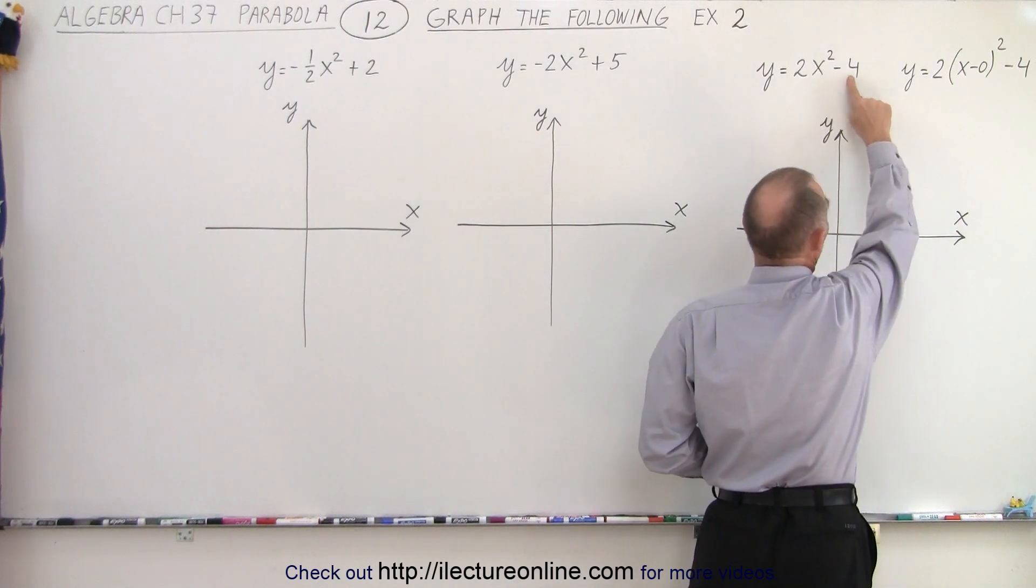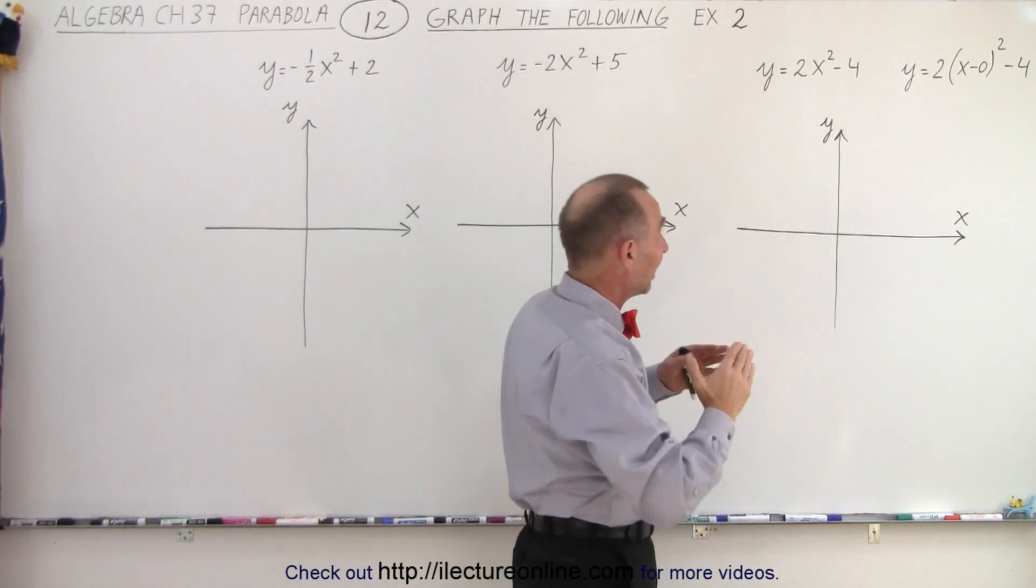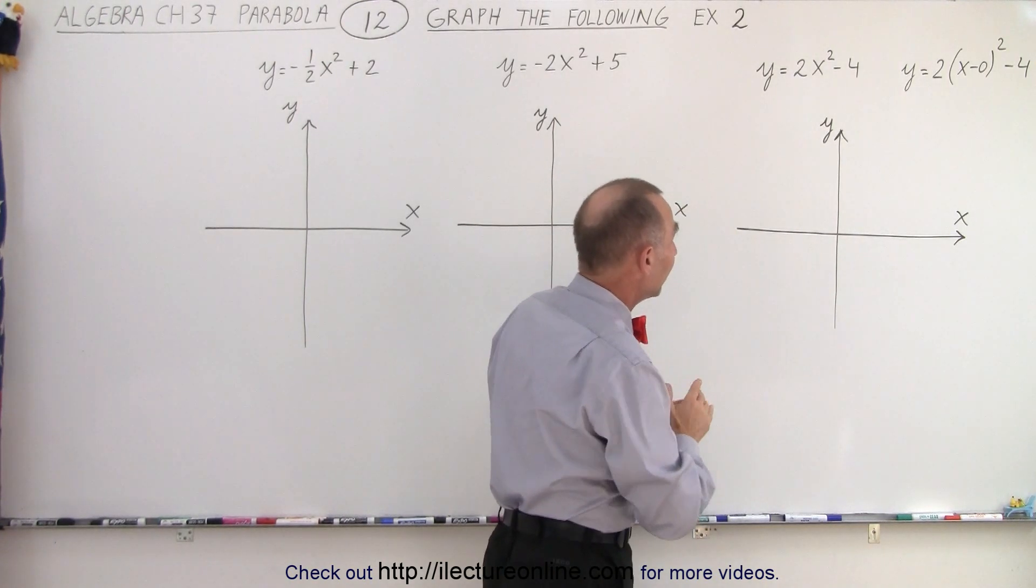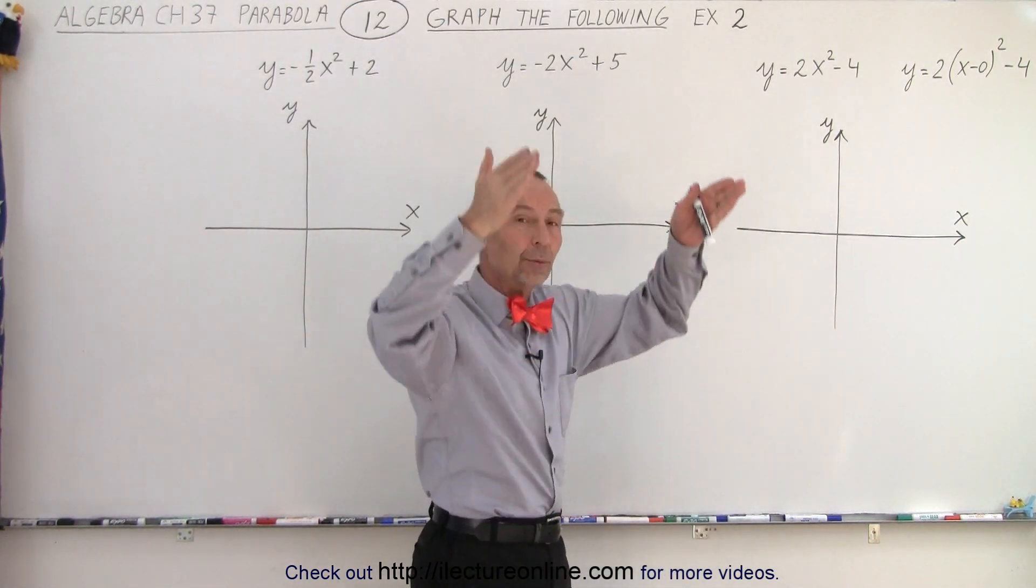But we do have a shift up or down because there's a constant. And then also there's a number 2 there which means y will grow twice as fast so the parabola will be skinnier. And the number in front is positive so we know that it will open upward.